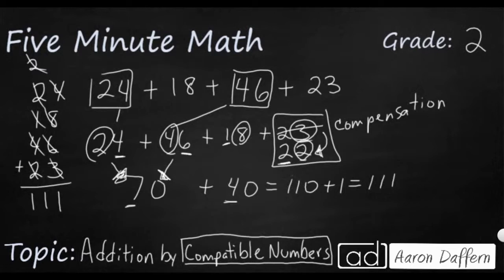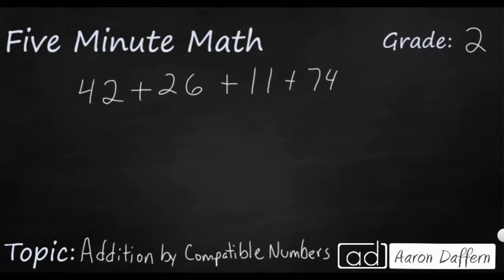Let's look at another example. Looking at this new example, the first two numbers I see that I want to play with are the 26 and the 74 because they're really close to 25 and 75. If I take one away from this 26 to make that a 25, I can add it to this 74 to make that a 75.